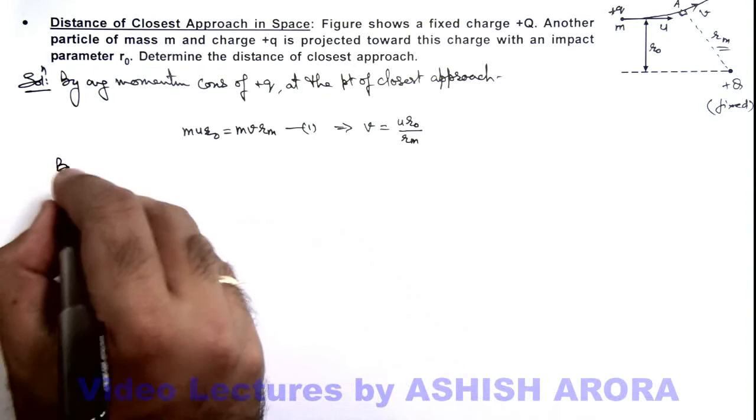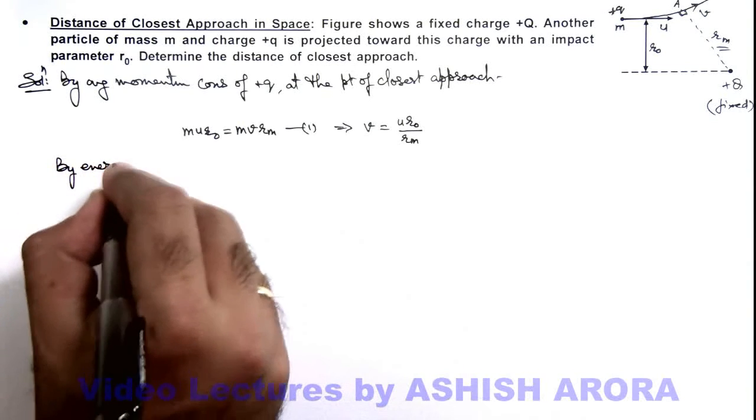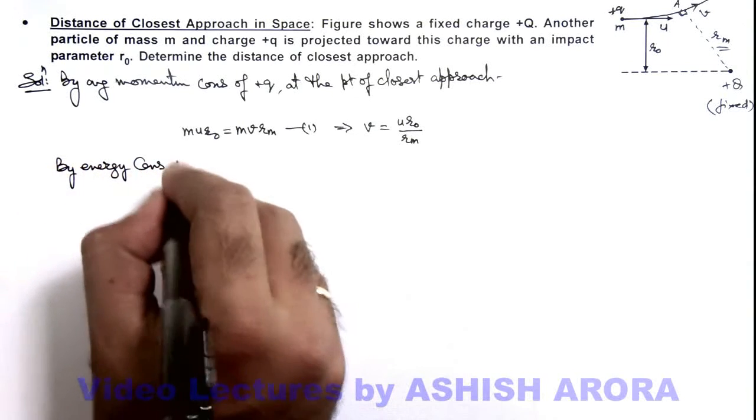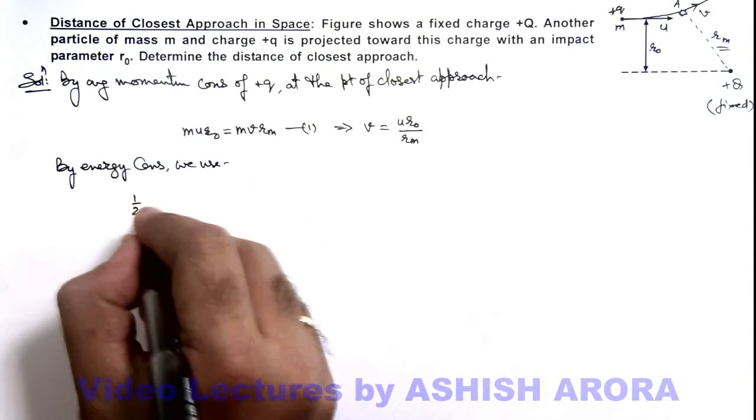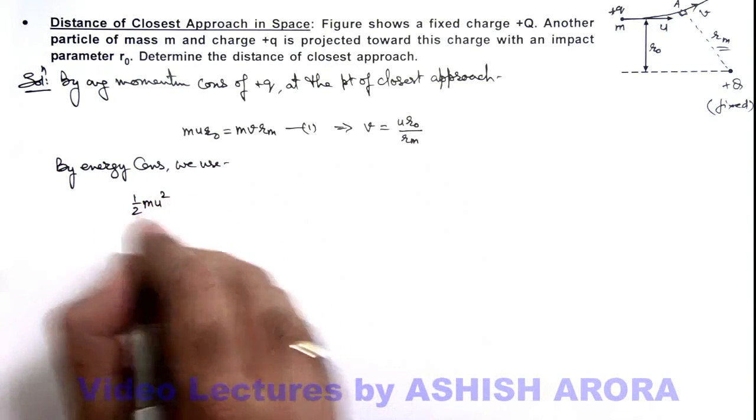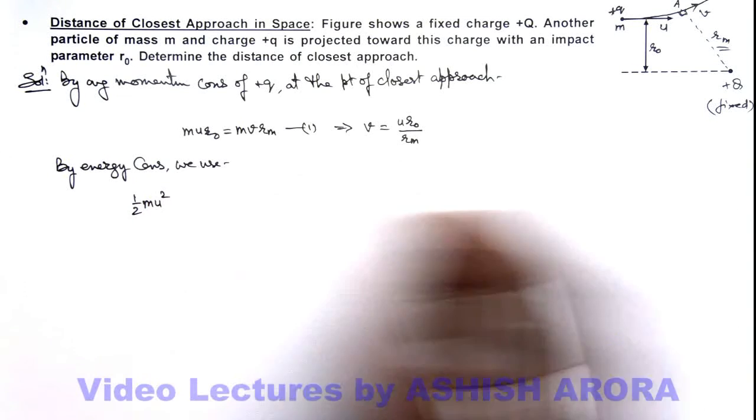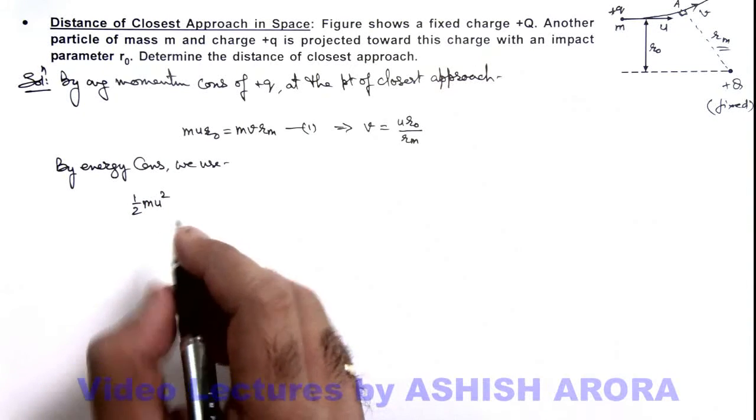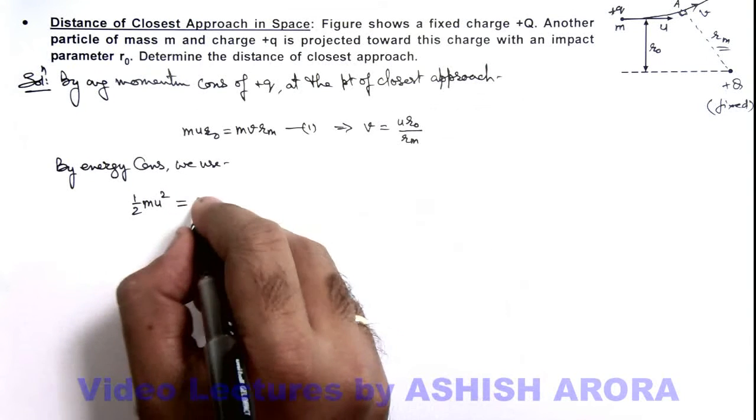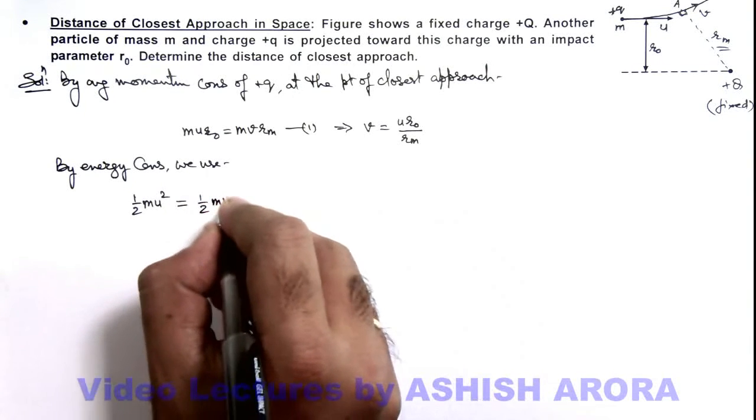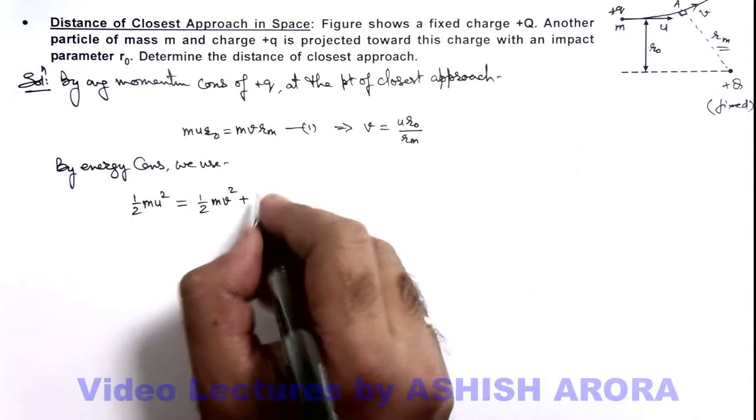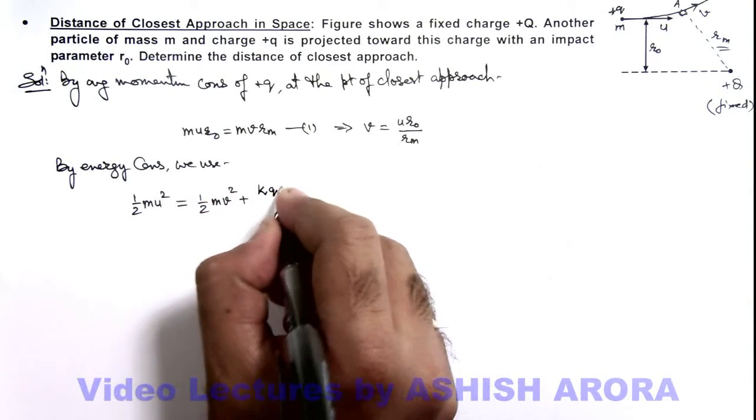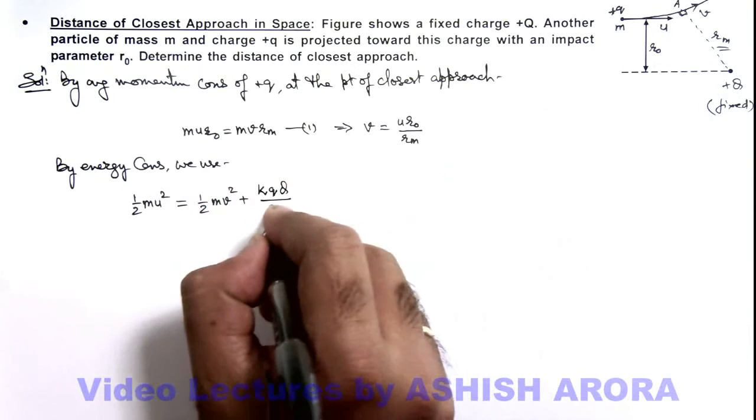By energy conservation here we can write, initial kinetic energy of the particle was ½mu². This was the only energy as it was at a far away point. This must be equal to the final energy which can be written as ½mv² plus the interaction energy of these two charges that can be written as kqQ divided by rₘ.